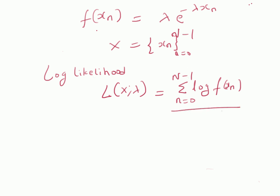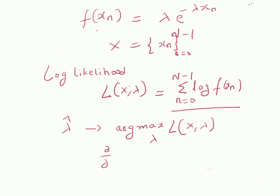We can find the unknown parameter lambda by simply maximizing this log-likelihood function. That is, lambda hat is given by the maximization of the log-likelihood with respect to lambda. This can be achieved by making the partial derivative of the log-likelihood function with respect to lambda equal to zero.